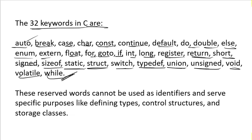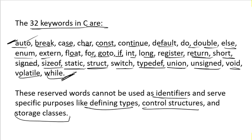These 32 keywords you should remember, and you will not use any of them as a variable or function name. These are reserved keywords in C and cannot be used as identifiers — they serve specific purposes. For example, if, else, do, while, etc. are used in control statements, and auto and register are used in storage classes. There were four types of storage classes. You can use these keywords only for their special purposes.